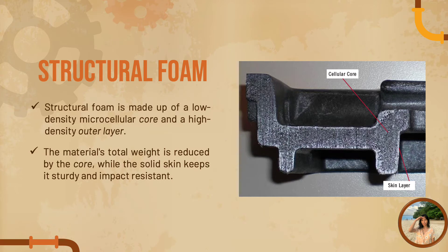Structural foam is a manufacturing material which bears a foamed core with a solid outer skin, rather than remaining solid all the way through. It is lightweight and flexible while also maintaining good strength and stiffness compared to traditional polymers such as polyurethane, polyester, or epoxy. The core decreases the overall weight of the material while the solid skin allows it to remain strong and impact resistant.